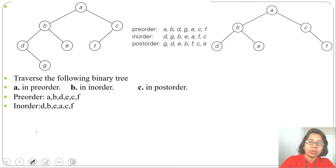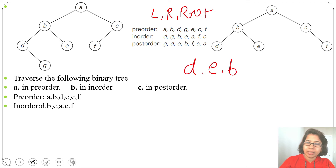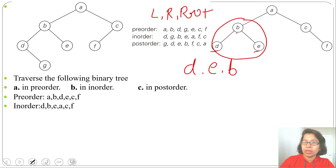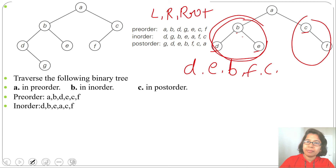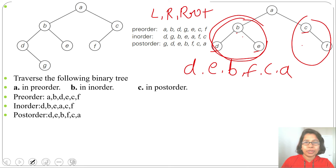For post-order (left, right, root): first visit D, then E, then B. In this subtree: left is D, right is E, root is B. Now for the right subtree: no left child, so visit right child F, then C. Right part done. Next visit A. Post-order result: D, E, B, F, C, A.